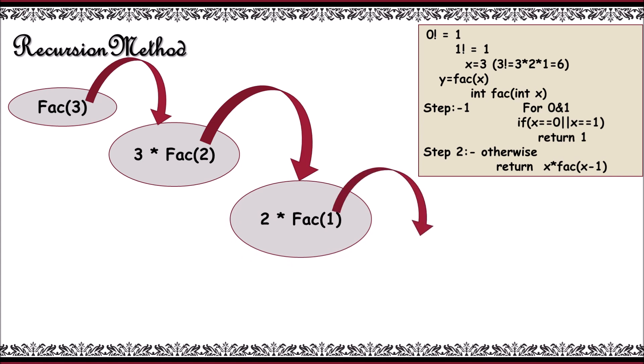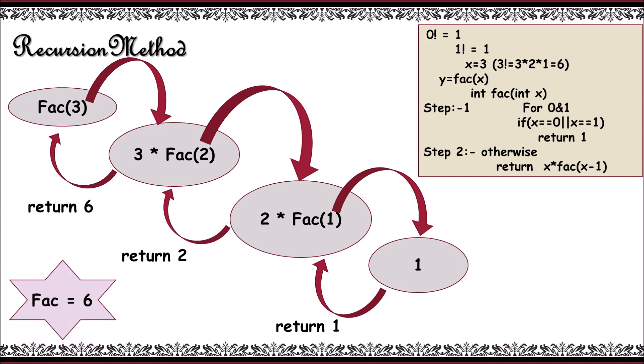Now, step 1 is executed. What happens when step 1 is executed is it returns 1. So this value is stored in fac of 1. Now, 2 into 1 is returned to fac of 2. Now, 3 into fac of 2, that is 6, is returned to fac of 3. And it is the final result.